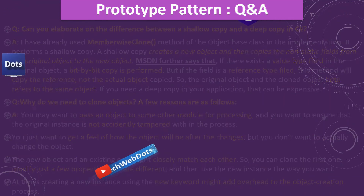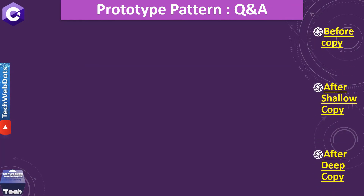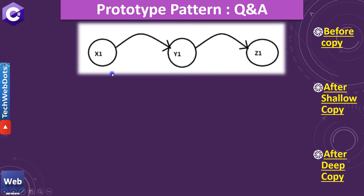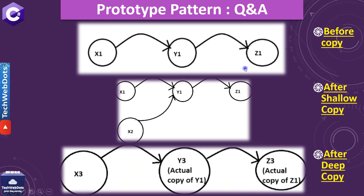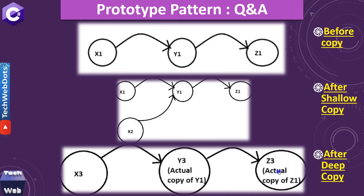Let me show you a visual diagram of how the object looks before copying, after shallow copy, and after deep copy. We have x1 referring to y1, which refers to z1 — three connected objects. After a shallow copy, a new x2 is created, but it ultimately refers to the same y1, which in turn refers to z1. After a deep copy, a new x3 is created, which creates y3 — an actual copy of y1 — and y3 creates z3, a copy of z1. That's why deep copy is expensive.